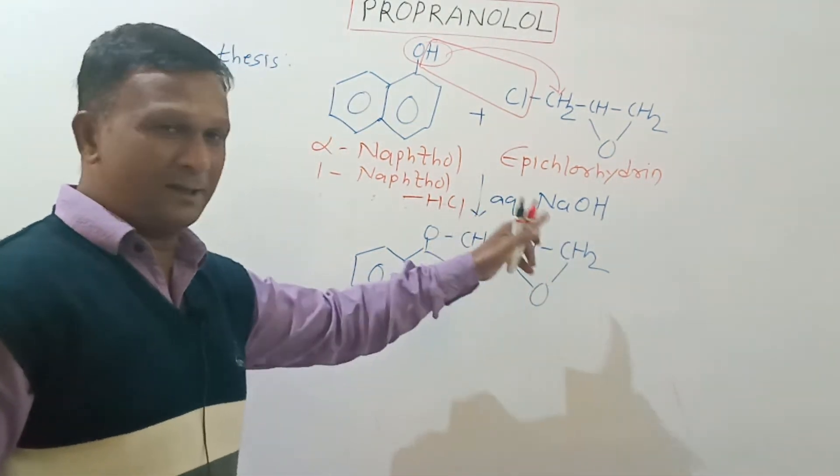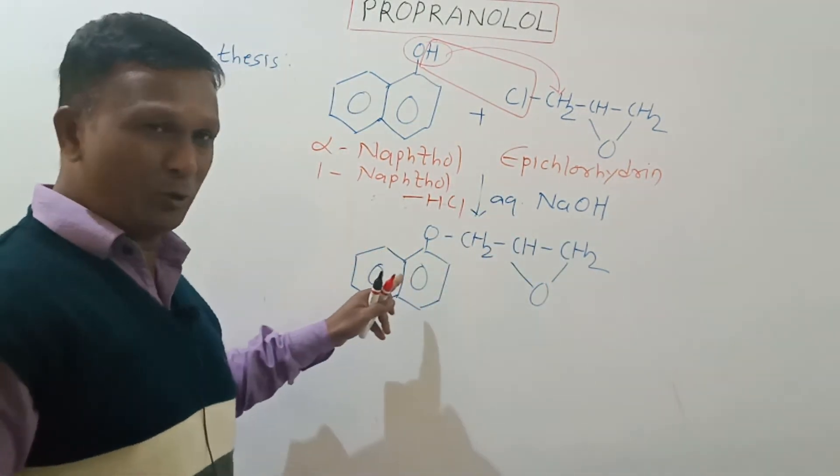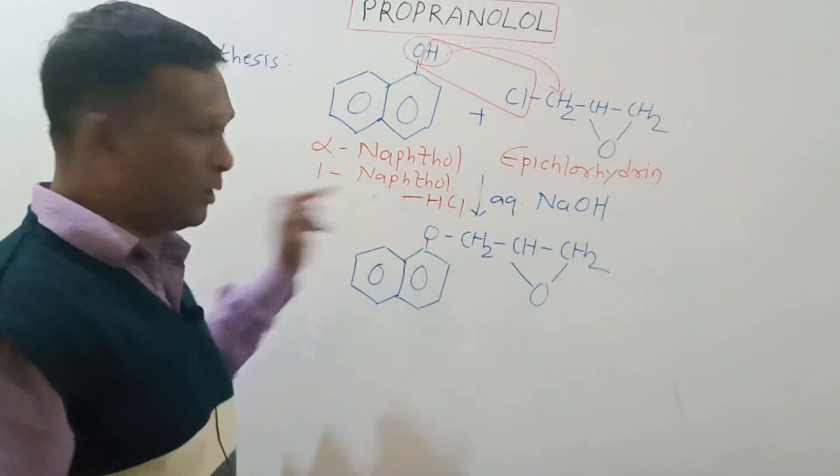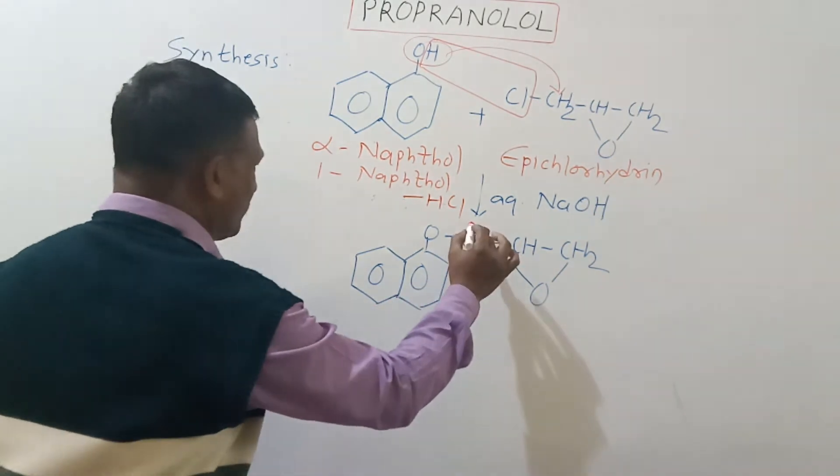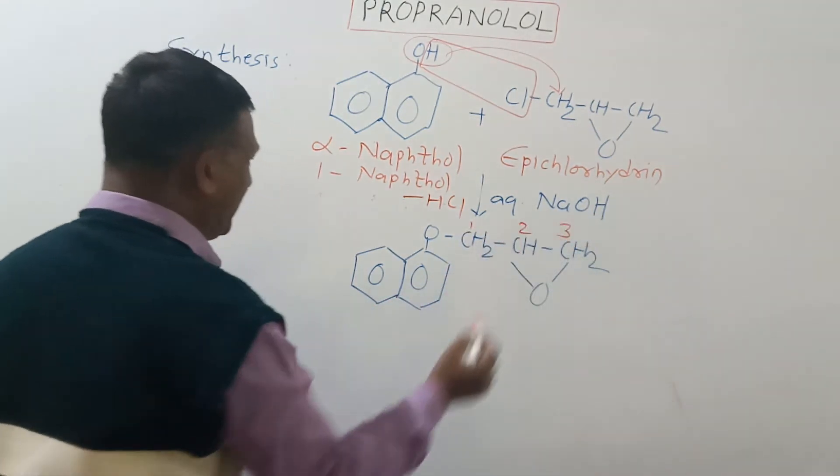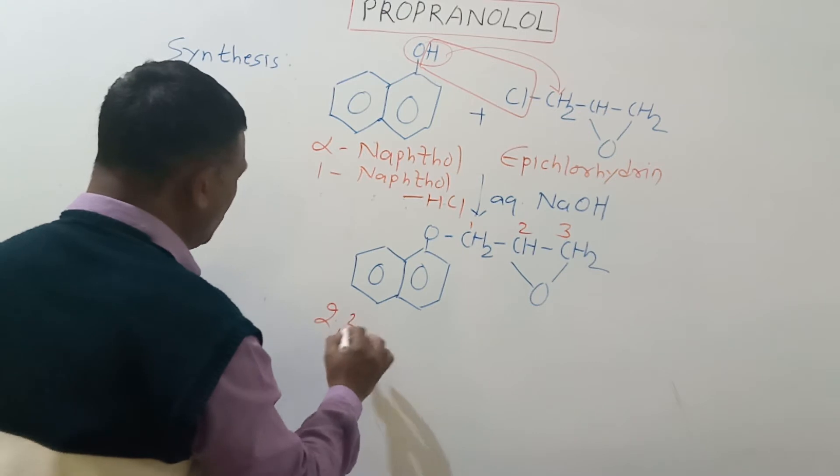Now here we can see that this is the alkyl portion, this is the aryl portion, and both the portions are attached with oxygen so it is ether. This ether is called - this is 1, 2, and 3 - so it is called 2,3-epoxypropyl alpha-naphthol ether.